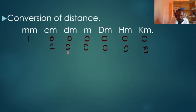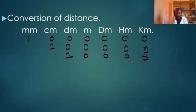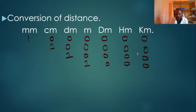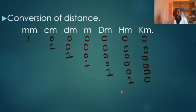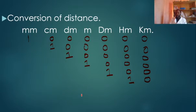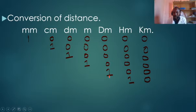This is incredible. Starting from decimeters and adding zeros: 10,000 decimeters equals one kilometer. 1,000 meters equals one kilometer. 100 decameters equals one kilometer. 10 hectometers equals one kilometer. So from this knowledge, you can do any conversion — from millimeters to centimeters, to decimeters, to meters, to decameters, to hectometers, to kilometers.